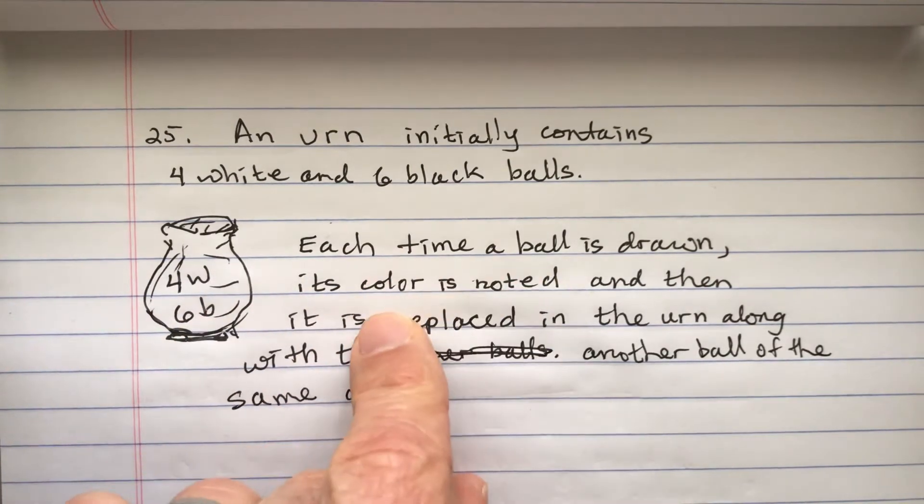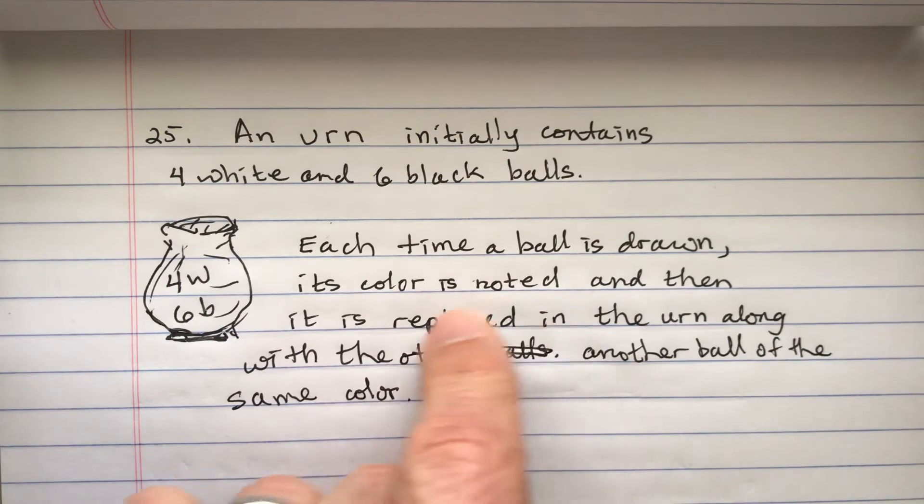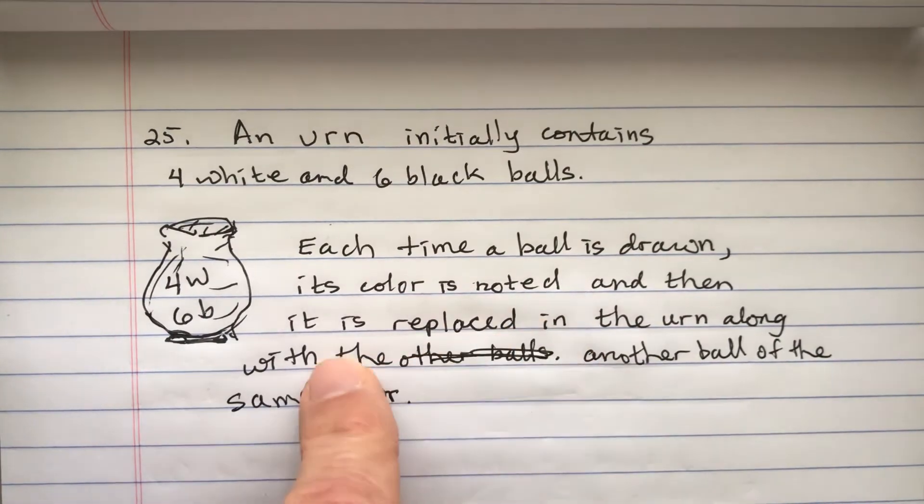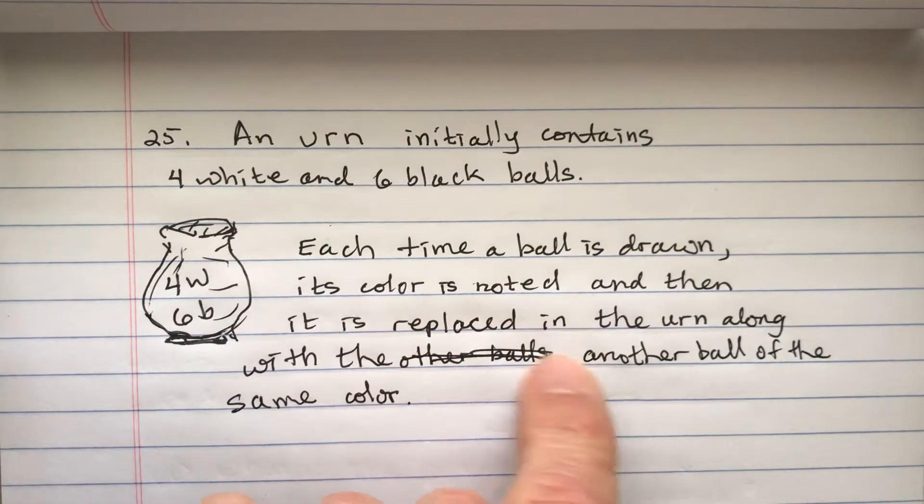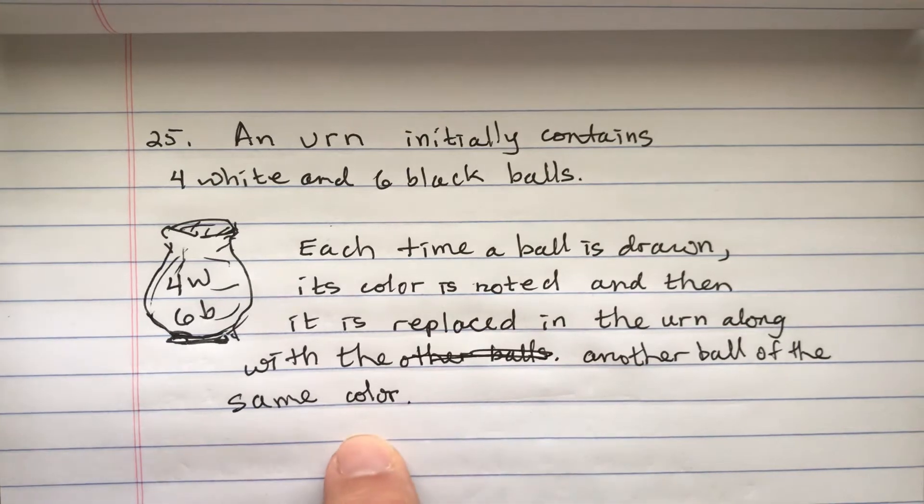Each time a ball is drawn, its color is noted and then it is replaced in the urn along with another ball of the same color. What is the probability that the first two balls drawn are black?